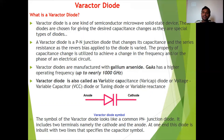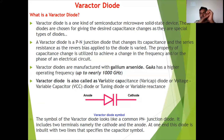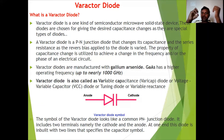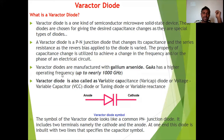Gallium arsenide gives a higher operating frequency. As a microwave solid-state device, it must produce a high amount of frequency — much higher than normal audio or video frequency. Varactor diodes manufactured with gallium arsenide have an operating frequency of up to nearly 1000 GHz. The varactor diode is also called a variable capacitance diode or varicap diode.